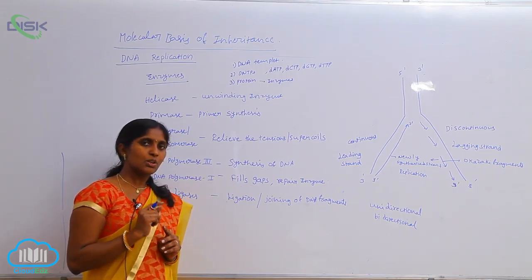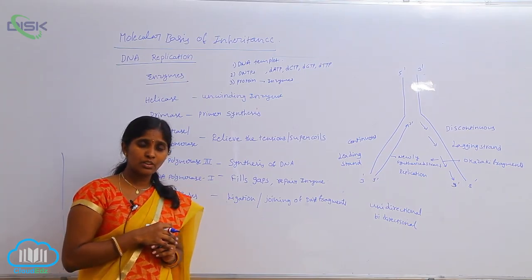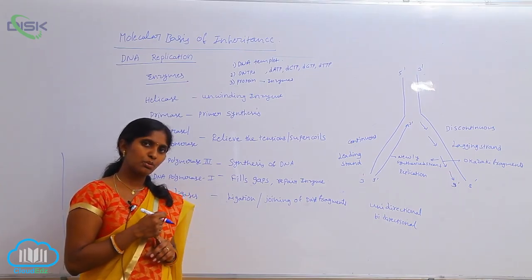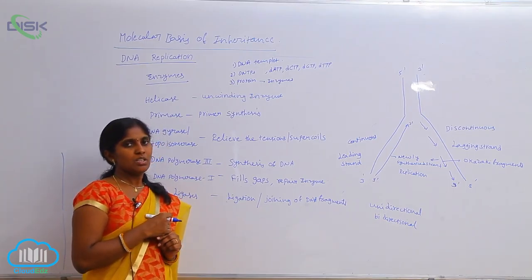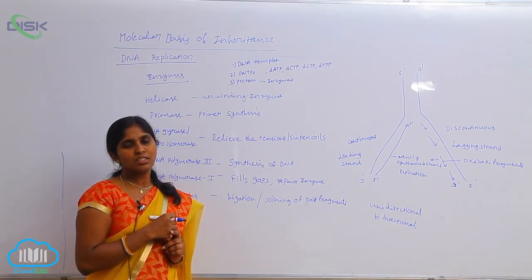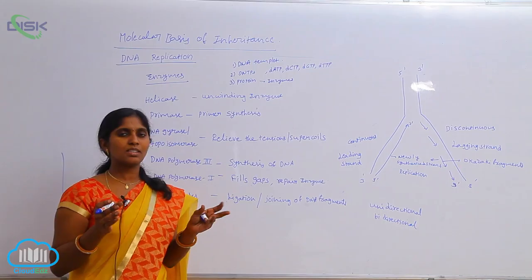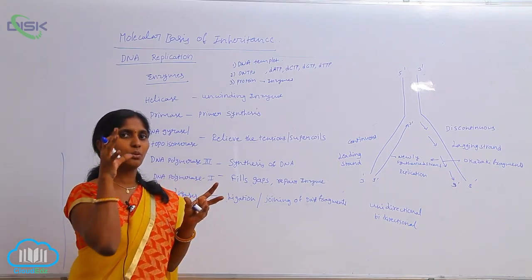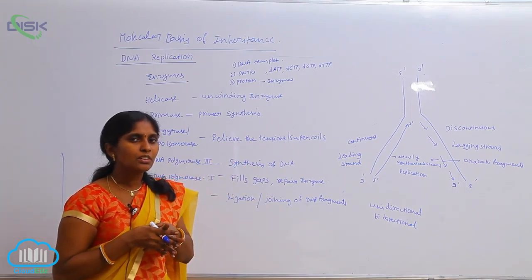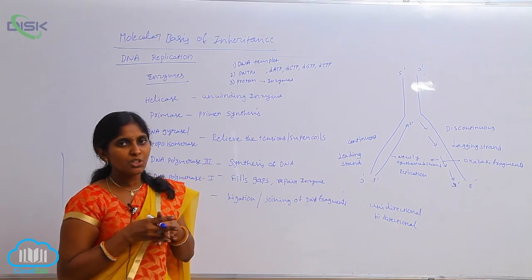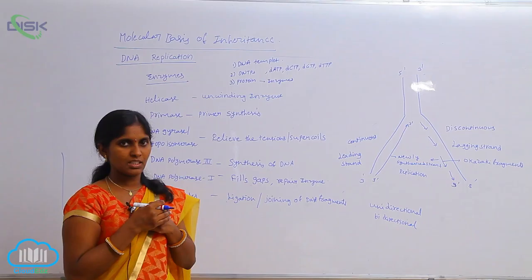After the helicase enzyme works and the double-stranded DNA is unwound into two single strands, other proteins are needed to maintain those single strands — these are the SSB proteins, or single-strand binding proteins. They join to the separated single strands to avoid rewinding of the DNA. So the main function of SSB proteins is to prevent the rewinding of the DNA strands.